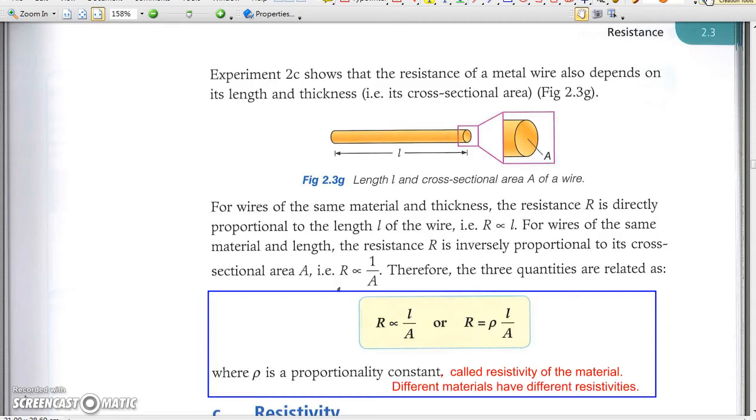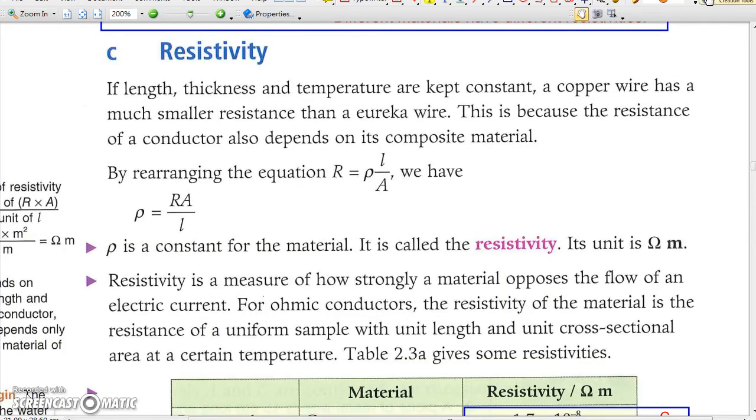Experimental result shows the resistance of a wire is directly proportional to the length, but inversely proportional to the cross-sectional area of the wire.